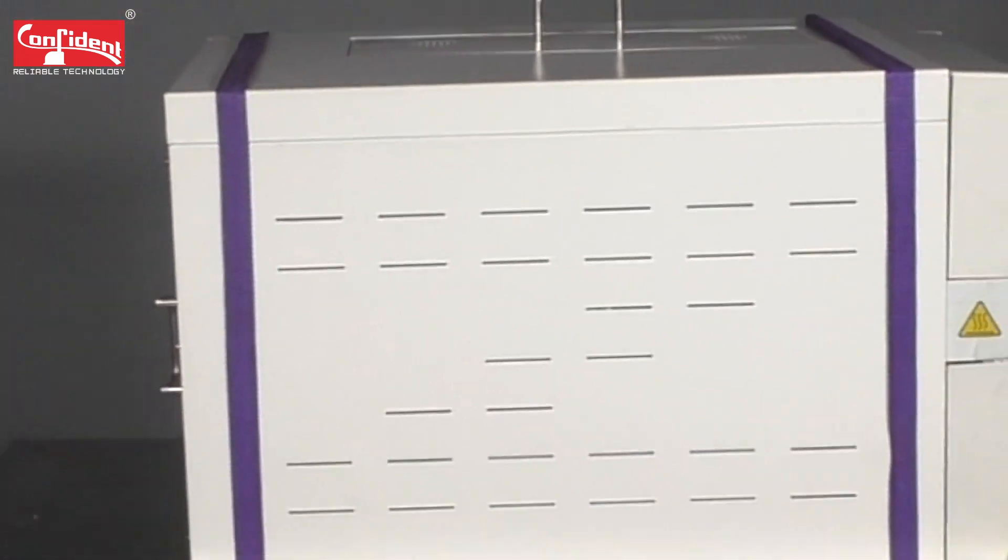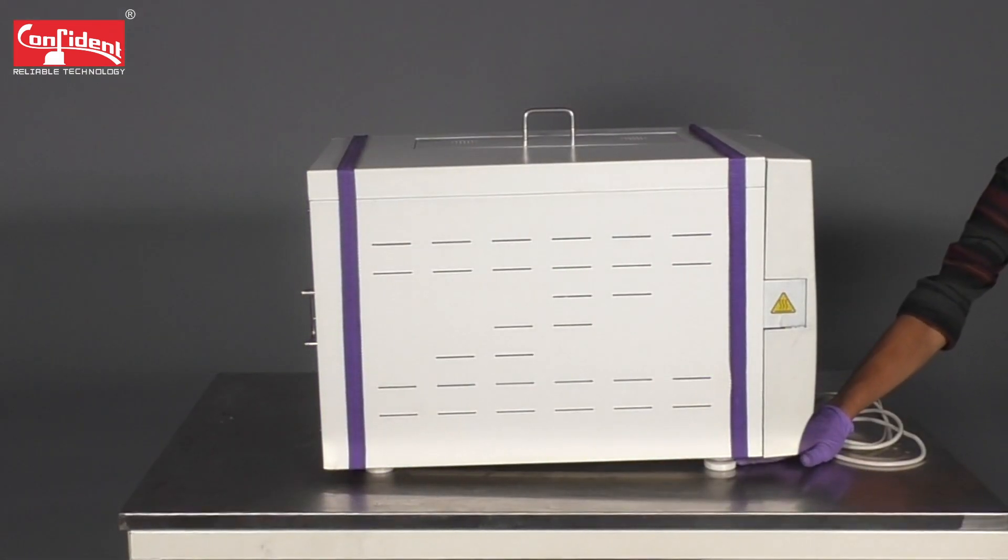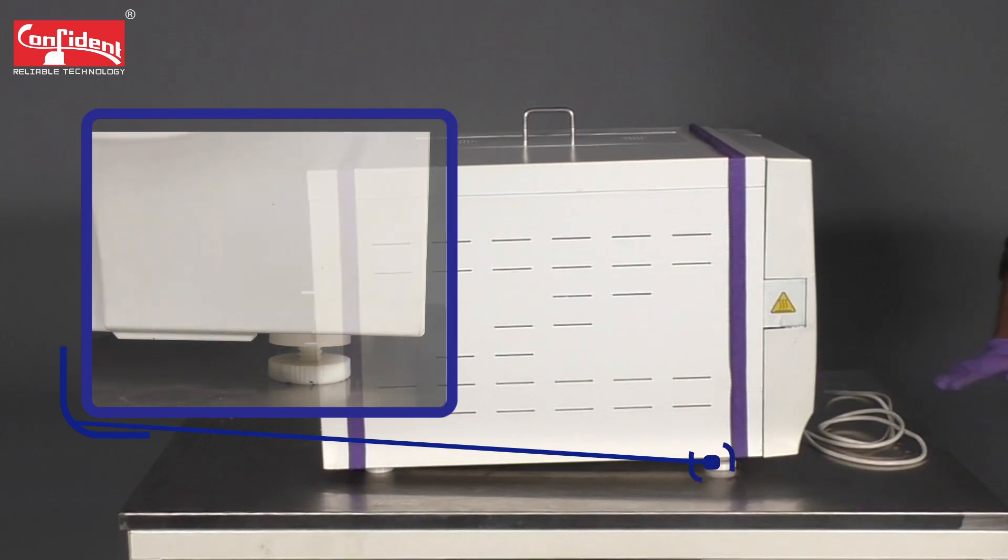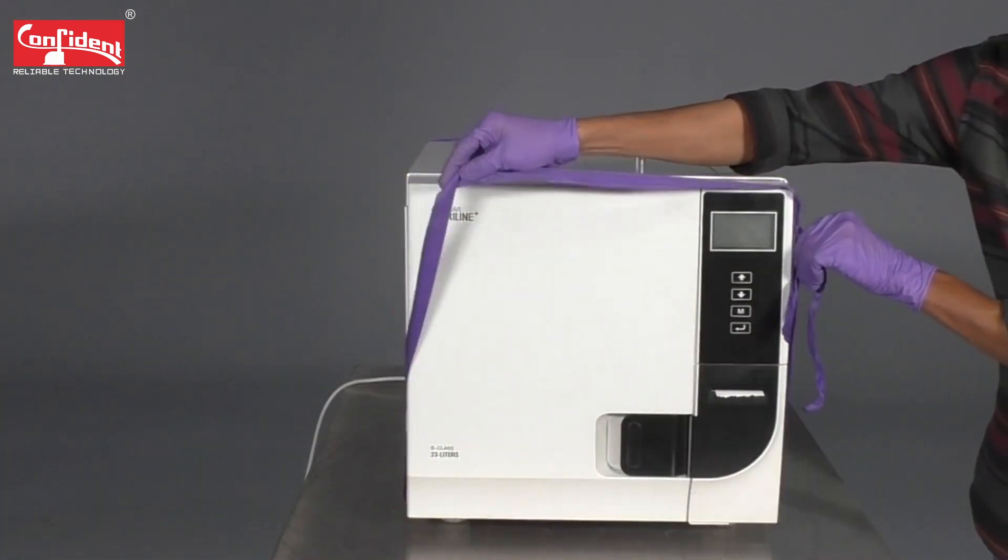Once you remove the device from the packing box, use the safety belts attached to lift the autoclave and place it on a flat table or any flat surface. Use the adjustable bushes to increase the clearance of the device from the surface or to level it properly. Insert the power cable to the device and remove the belts.